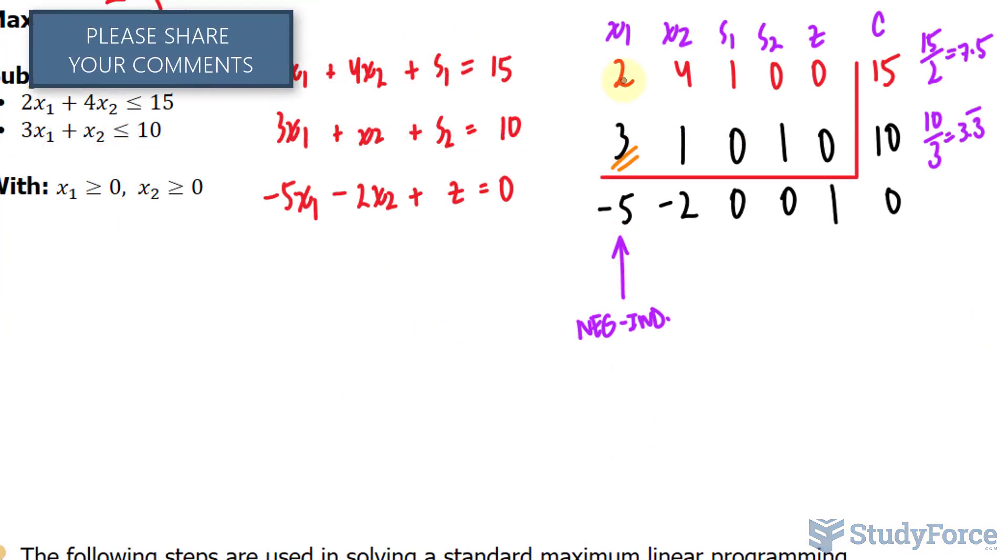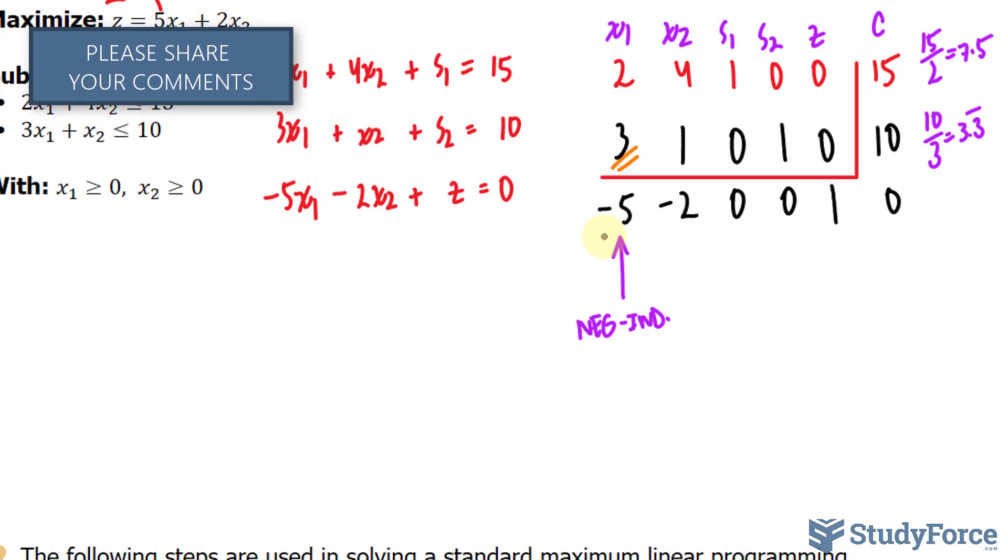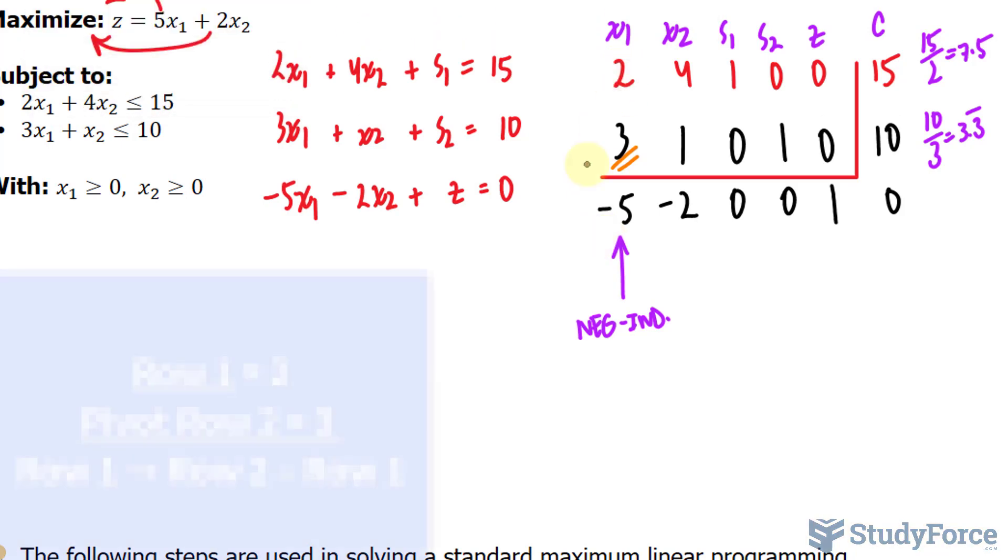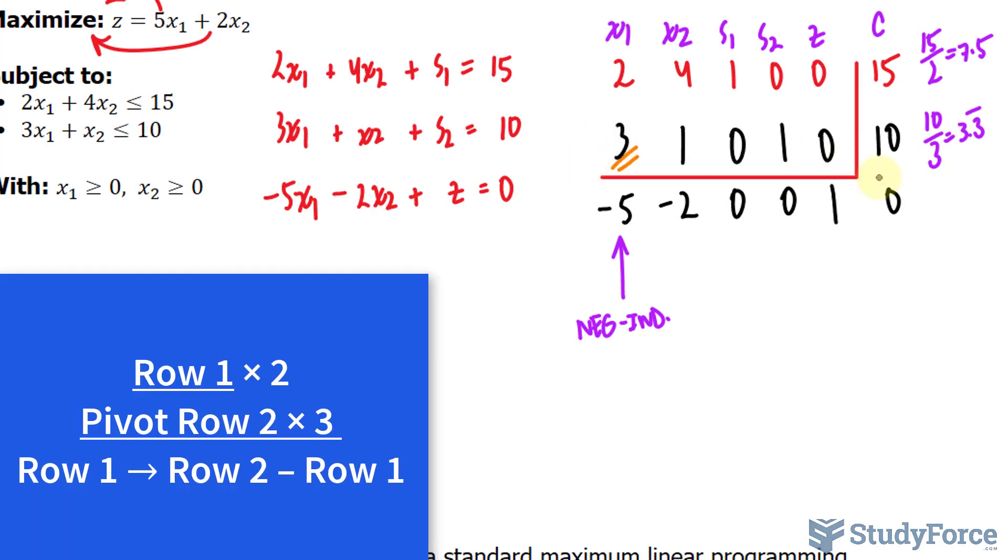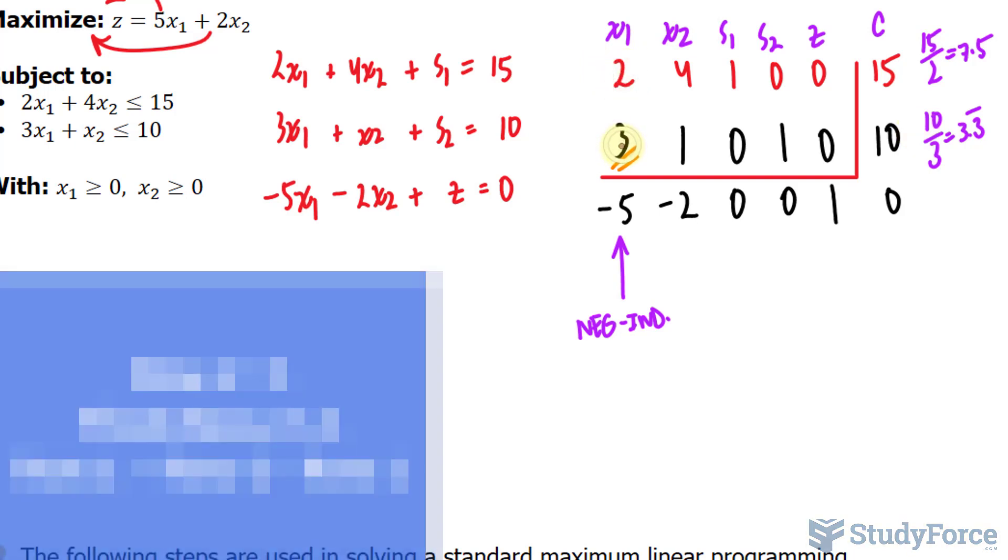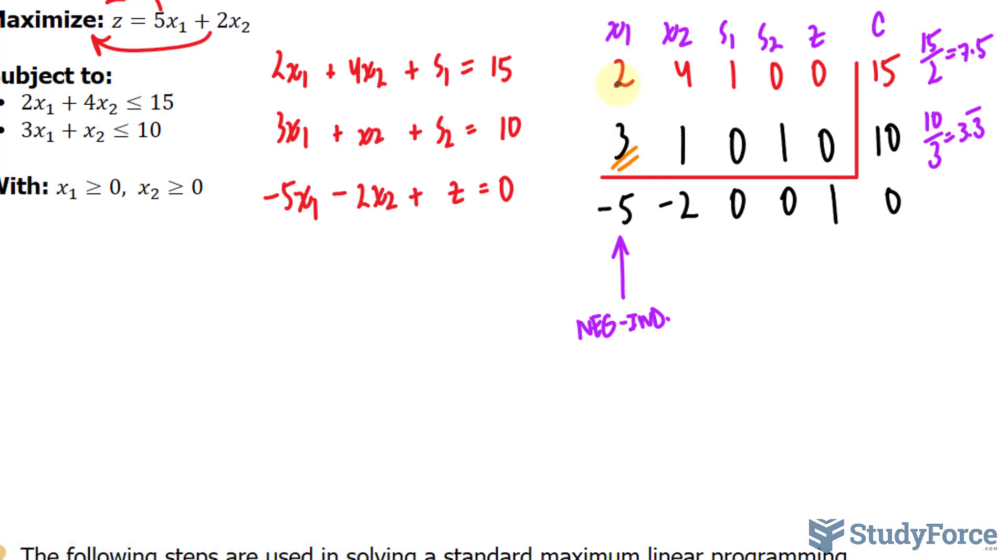We have to figure out a way to make this 2 and this negative 5 into zeros. Let's go ahead and do that. To make this 2 into a 0, I'll multiply this whole row by 2 and this whole row by 3 and subtract row 1 from row 2. If I multiply this by 3, I end up with 6. That becomes a 6. 6 minus 6 is equal to 0. Let's try the next one. This times 2 is equal to 2, and that times 3 is equal to 12. 2 minus 12 is negative 10.